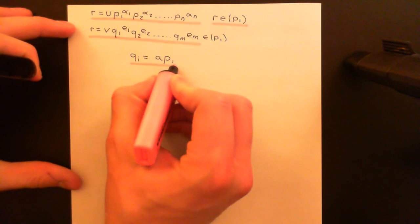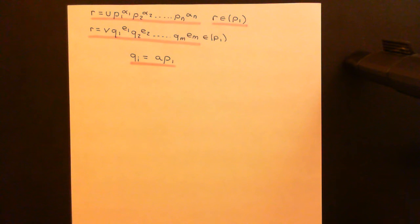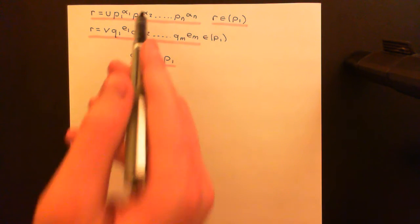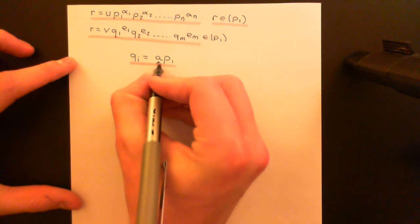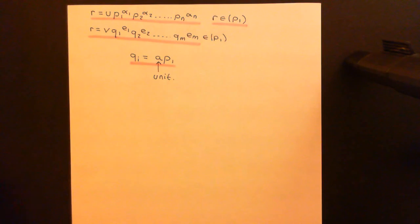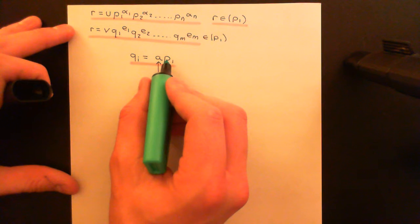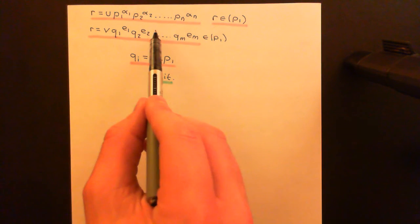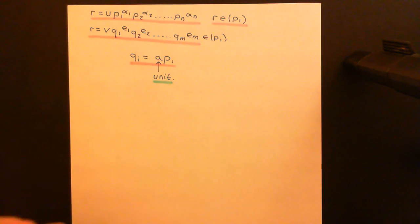What can we conclude from this? qi is an irreducible, because it appears in the irreducible factorization. The definition of irreducible says that if you have a product of two things that makes that element, one of them must be a unit. Now p1 is not a unit — it was irreducible in its factorization, and irreducibles by definition are not units. So a here must be a unit. That means qi is just a unit times p1, so qi is an associate of p1. I can now substitute a times p1 in place of qi, take the a out to the front, and I now have p1 appearing in the second irreducible factorization.